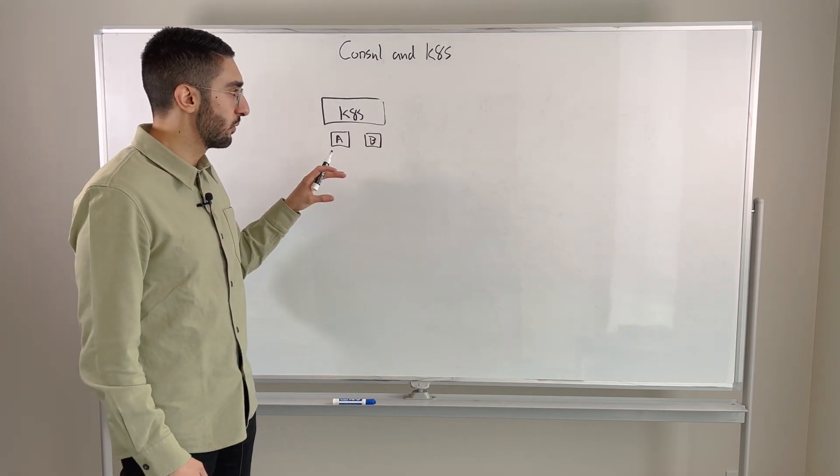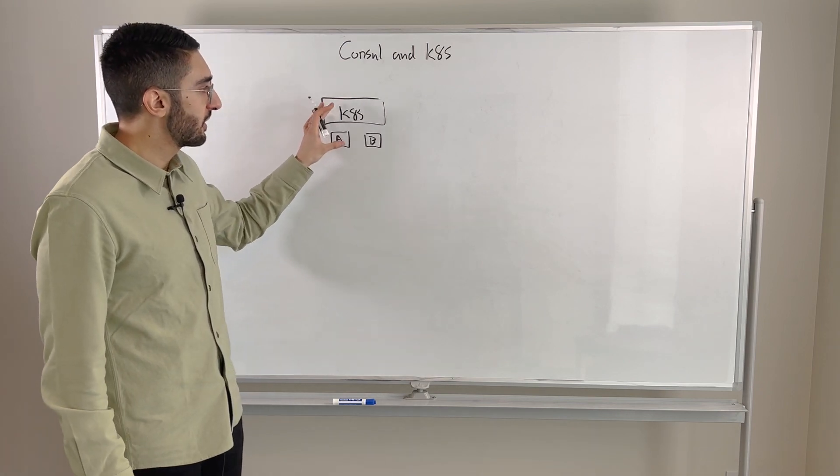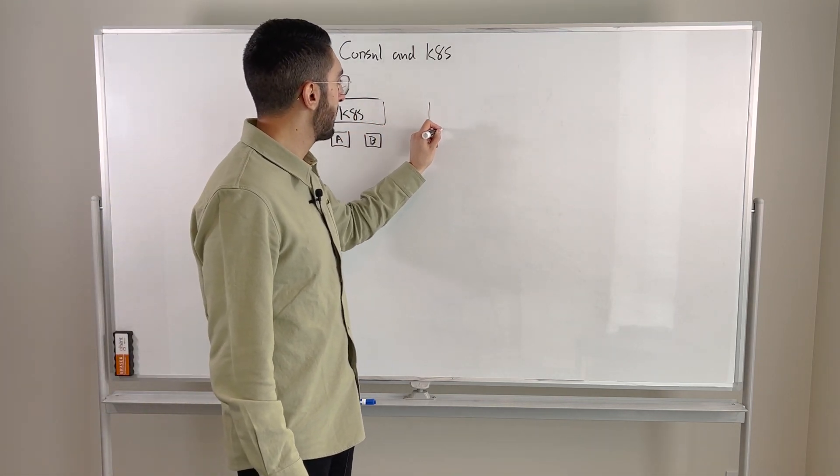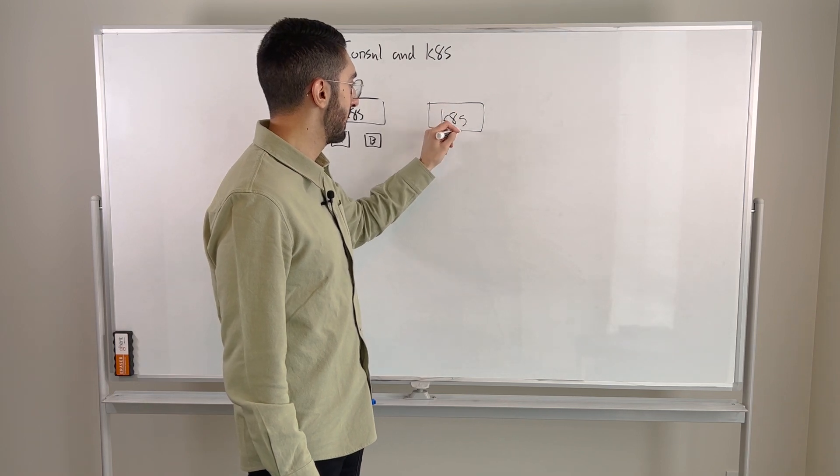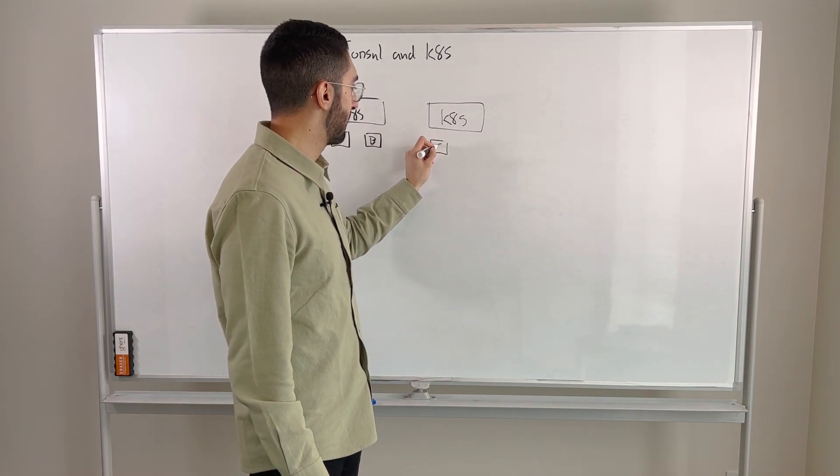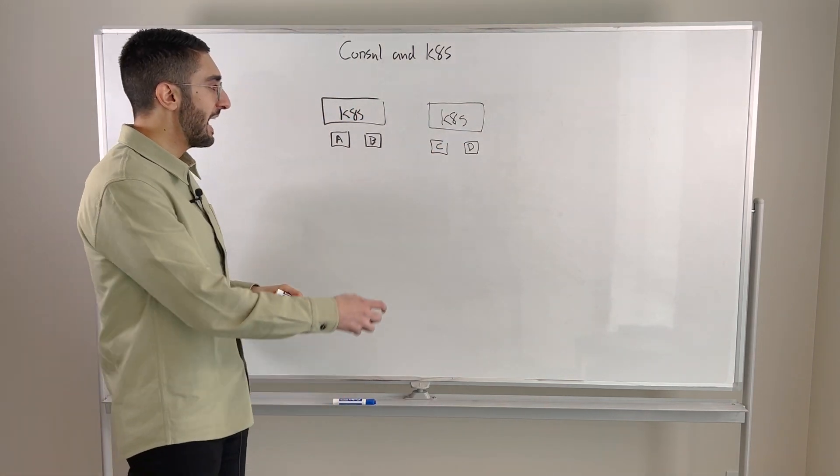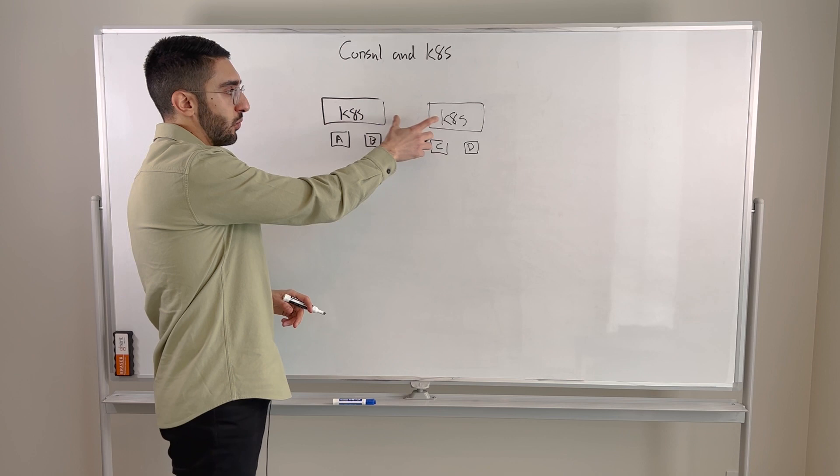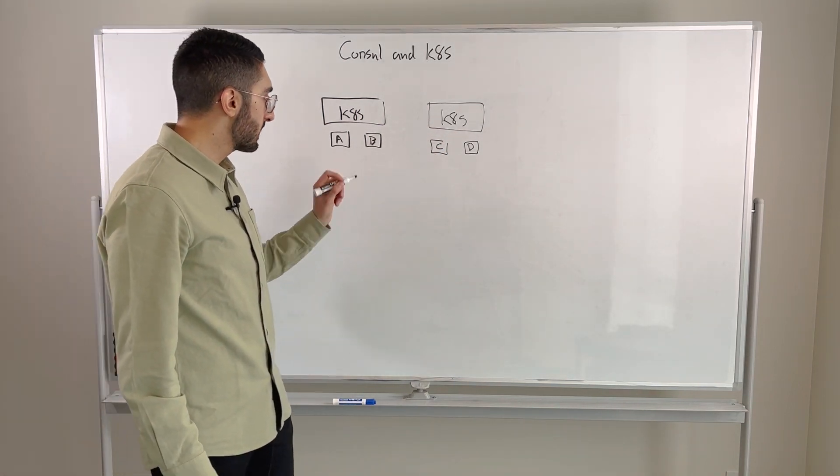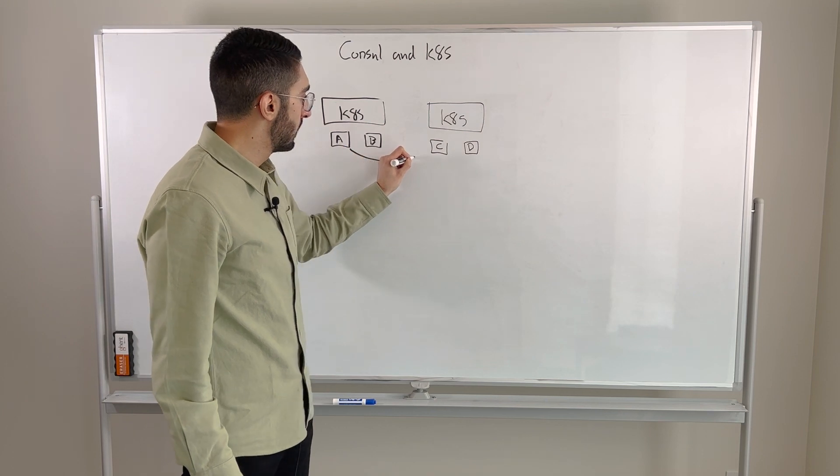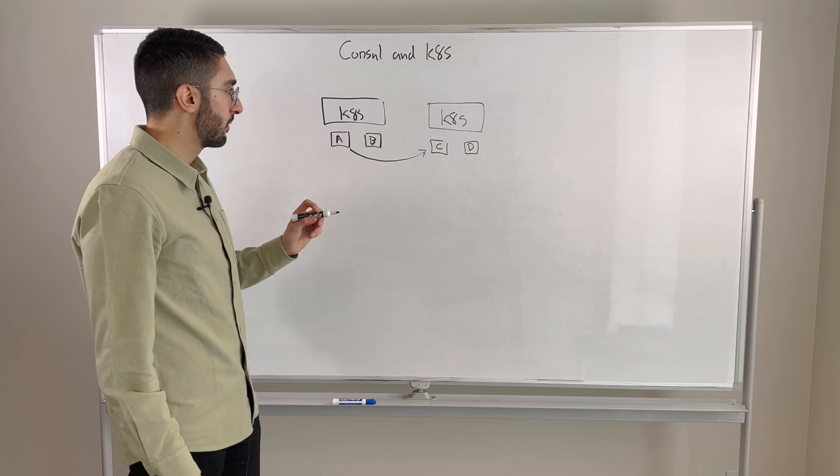Where Consul really starts to play a role is once we start to draw a slightly more complicated picture. For a lot of folks, their challenge is they don't have a single Kubernetes cluster. They actually have multiple. You might have a different cluster with other applications running on them. And now the challenge is how do the applications on cluster one discover and talk to applications in cluster two? So this becomes one of the first areas where the value of Consul comes to play around how do we do this type of service discovery.